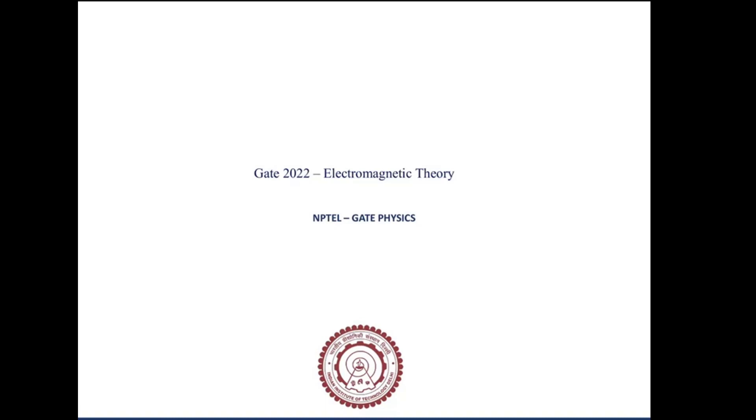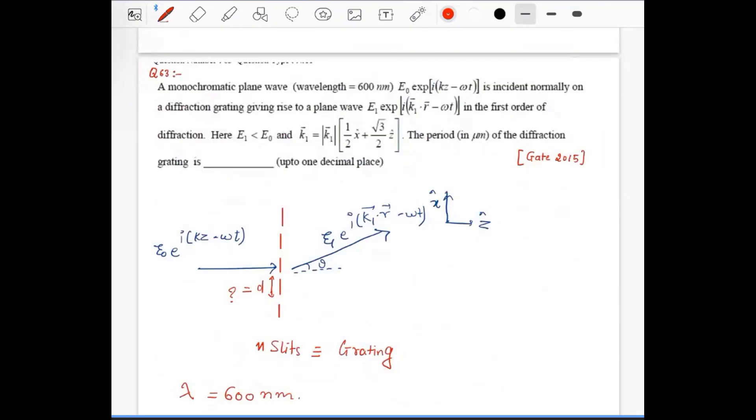Hello everyone, welcome to the NPTEL lecture course. Today we are going to solve some GATE problems. A monochromatic plane wave of wavelength 600 nanometers, given by this expression, is incident normally on a diffraction grating.